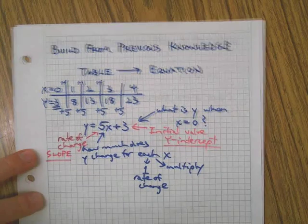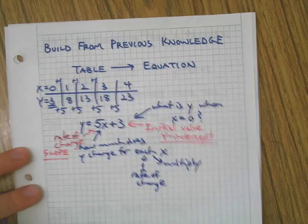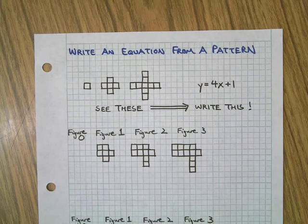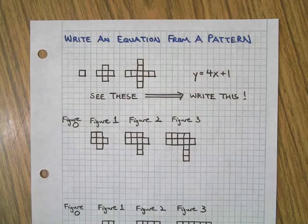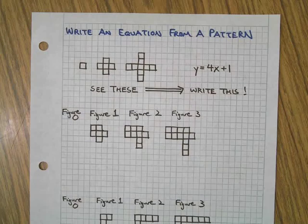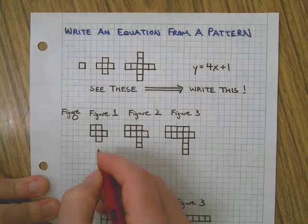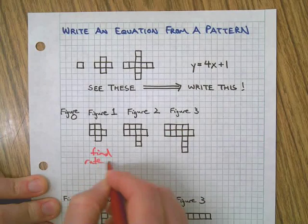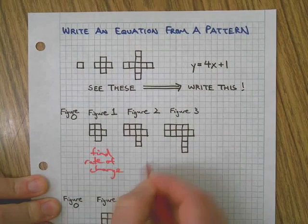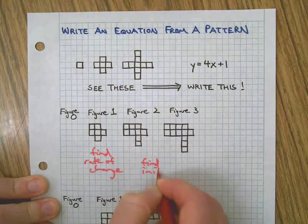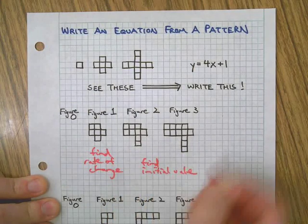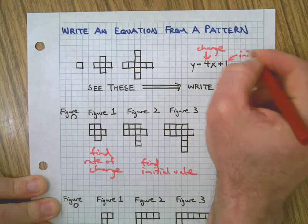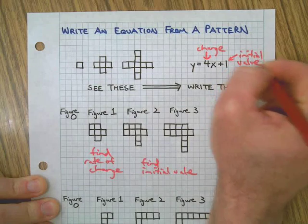Now let's relate all that to patterns. Here's how it works. When we're looking at a series of patterns that change and grow, we want to find those two things. If we're going to write an equation, we need to find the rate of change and we also need to find the initial value. Once we have those two things, we can easily write the equation.